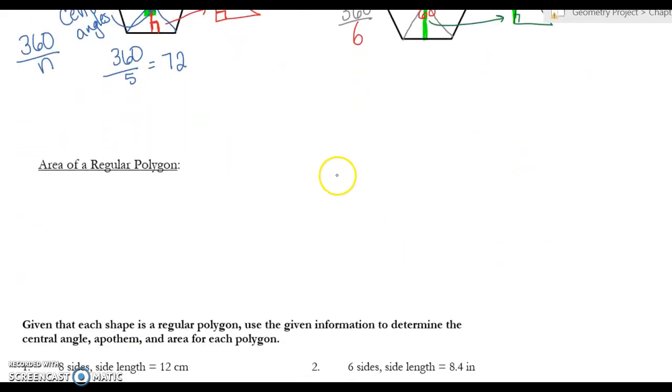All right, so now the area of a regular polygon is 1/2 a, and that stands for apothem, times capital P, which stands for the perimeter of the polygon. Okay, so 1/2 apothem times perimeter.